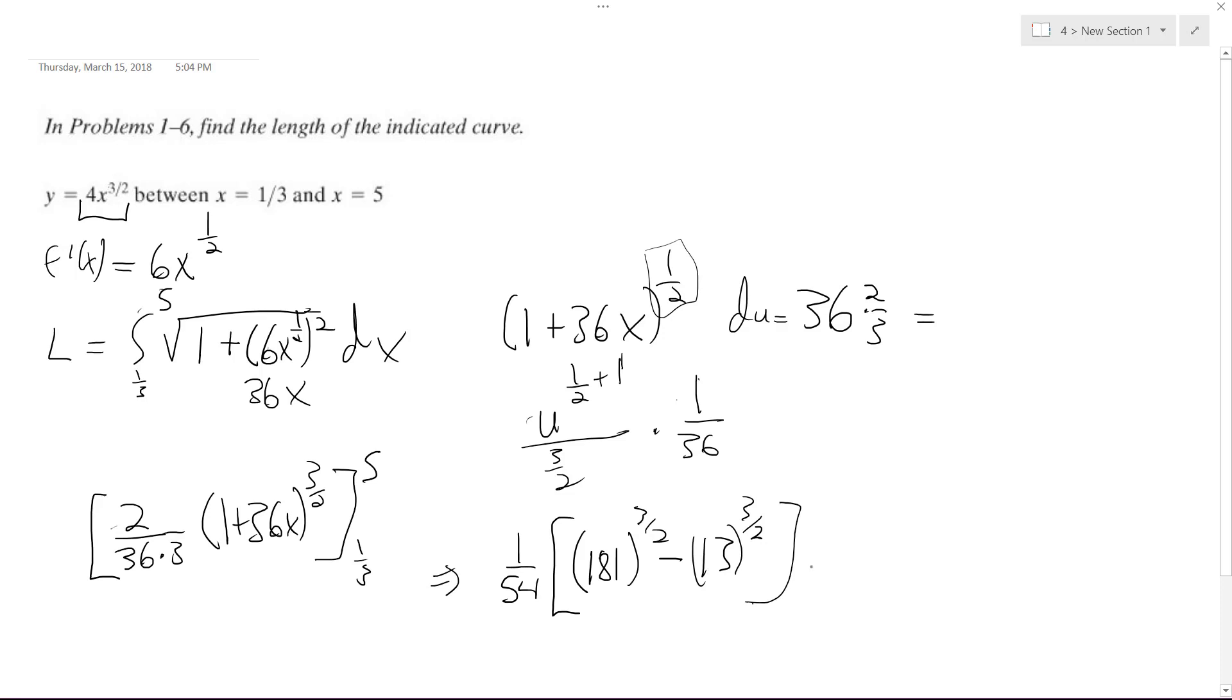So ultimately, I mean you can factor these out a little bit, so you can have like 181 times the square root of 181, but we'll just leave it like that. So this is the solution right here, this is the length of the curve, but approximately what this ends up being equal to is 44.2.